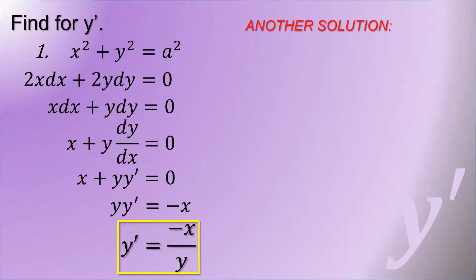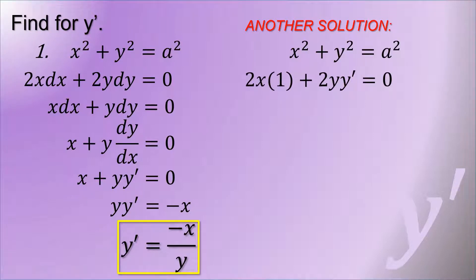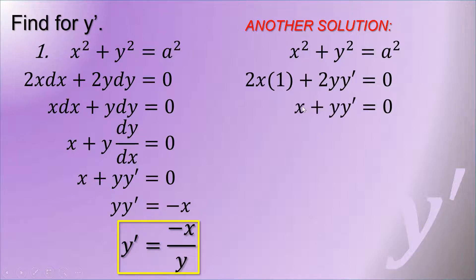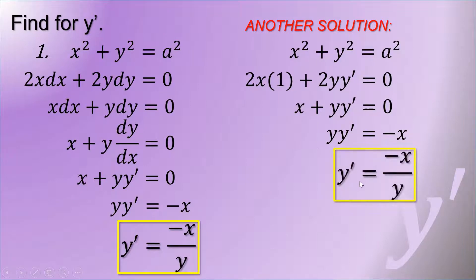For a simpler solution, given the same equation, we consider the derivative of x is equal to 1, and the derivative of y is equal to y prime. So that is 2x times 1 plus 2y y prime equals 0, and then x plus y y prime equals 0 after dividing by 2. Transposing x and finding for y prime gives negative x over y.